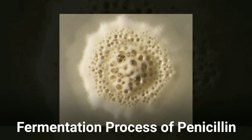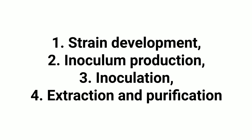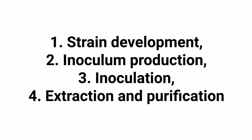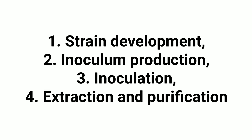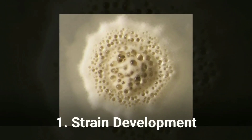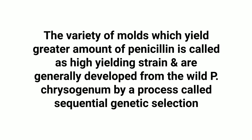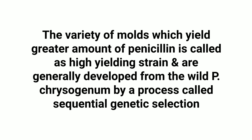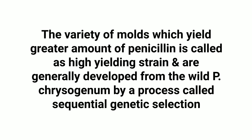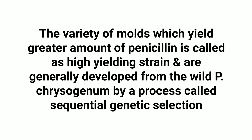There are four stages in the production of penicillin: first, strain development; second, inoculum production; third, inoculation; and fourth, extraction and purification. For strain development, the variety of mold which yields a greater amount of penicillin is called a high-yielding strain, and these are generally developed from the wild Penicillium chrysogenum by a process called sequential genetic selection.